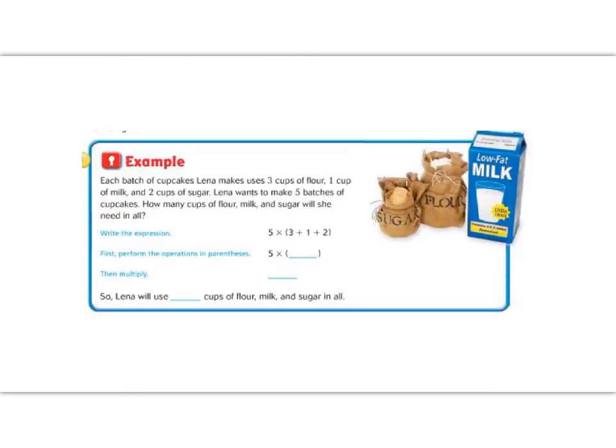Let's practice order of operations with a slightly longer numerical expression. It says, each batch of cookies that Lena makes uses 3 cups of flour, 1 cup of milk, and 2 cups of sugar. Lena wants to make 5 batches of cupcakes. How many cups of flour and sugar and milk will she need in all?